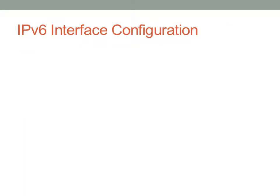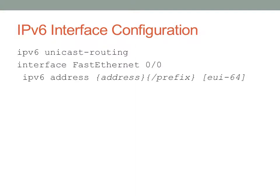IPv6 interface configuration is pretty simple. First, you have to enable IPv6 with the command 'IPv6 unicast-routing.' Then you configure an IPv6 address on an interface, specify the address and prefix if necessary. Optionally, you can append 'EUI-64,' which takes the prefix you specified and appends the MAC address with FFFE in the middle — that's the EUI-64 specification. I encourage you to look up EUI-64 so you know how those addresses are constructed.